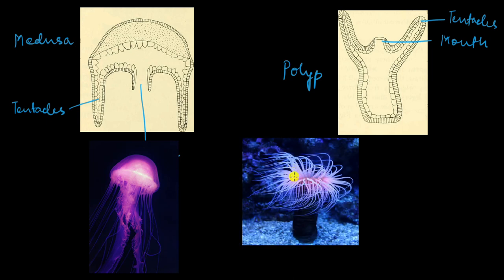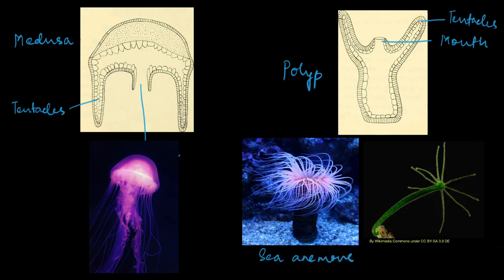What about the polyp? Examples for the polyp forms are sea anemone and hydra.